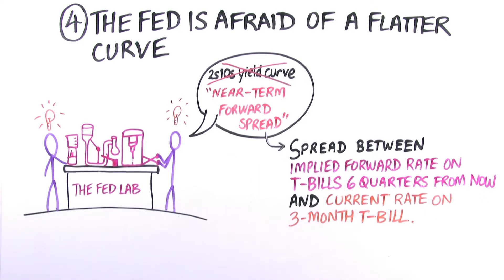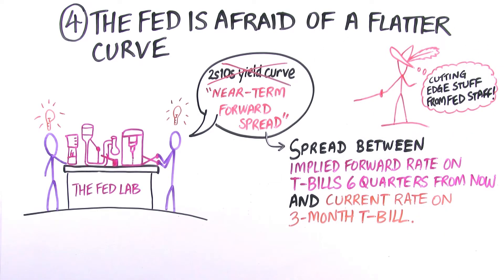It seems that the near-term spread conveys more information about the path of the economy, the likely path of monetary policy, and is a better predictor of the business cycle than longer-term spreads like the 2s-10s.